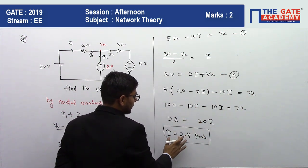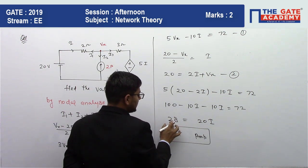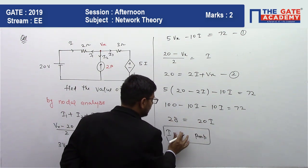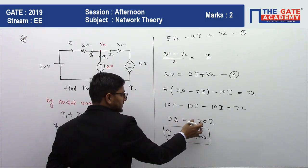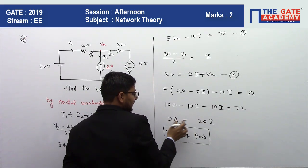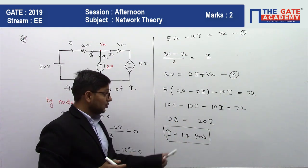The value of I, sorry, it will be equal to, just divide 28 by 20, equals 1.4. The answer, the final result is 1.4 ampere.